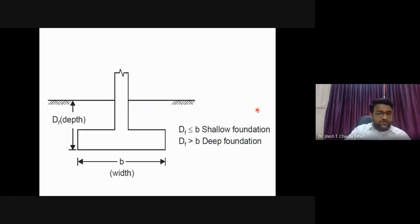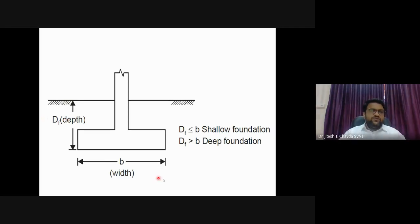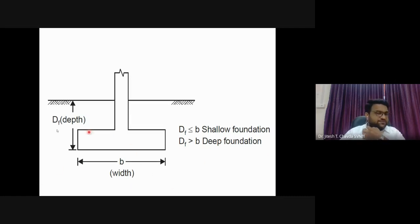Generally, if the width of the foundation is greater than the depth of the foundation, it is called a shallow foundation. If the width is smaller than the depth, it is called a deep foundation. This distinction matters because the failure theory assumptions change, and the failure zones formed are different for shallow versus deep conditions.